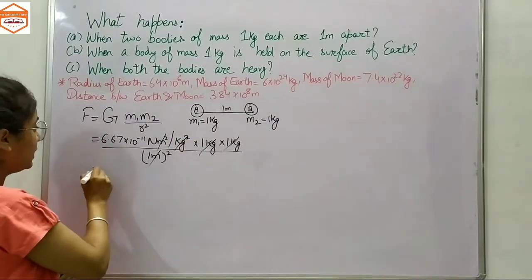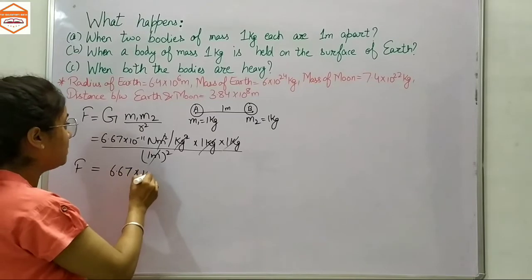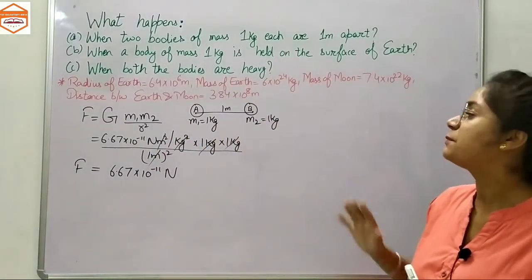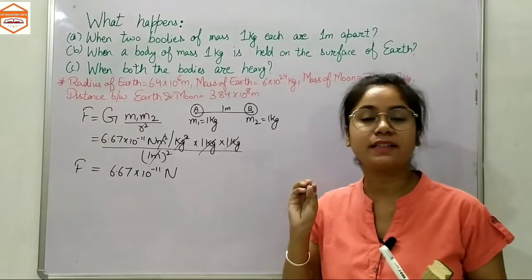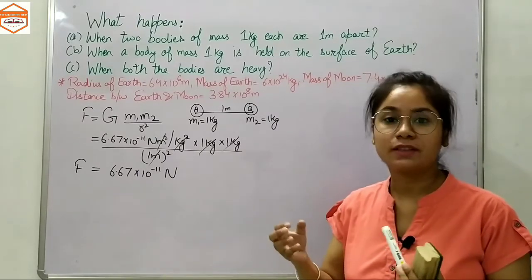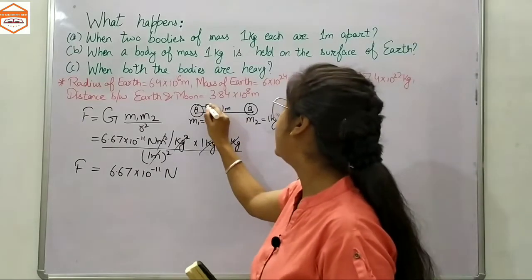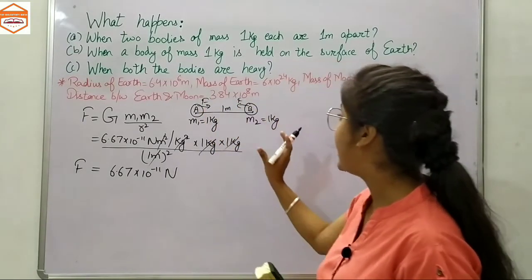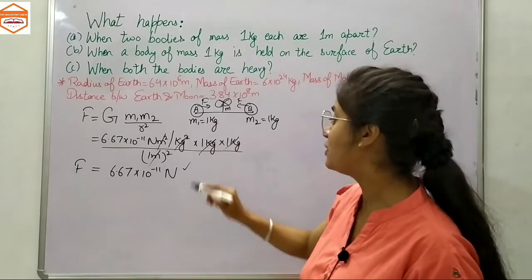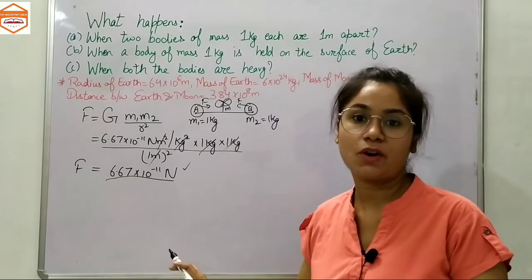Solving the equation, the units cancel out and the other values are just one, so the gravitational force equals 6.67 × 10⁻¹¹ newtons — which is very small. But this proves that no matter how small the bodies are, they are applying a gravitational force of attraction upon each other. They cannot actually move toward each other because the force is very weak, but it is present in some quantity.